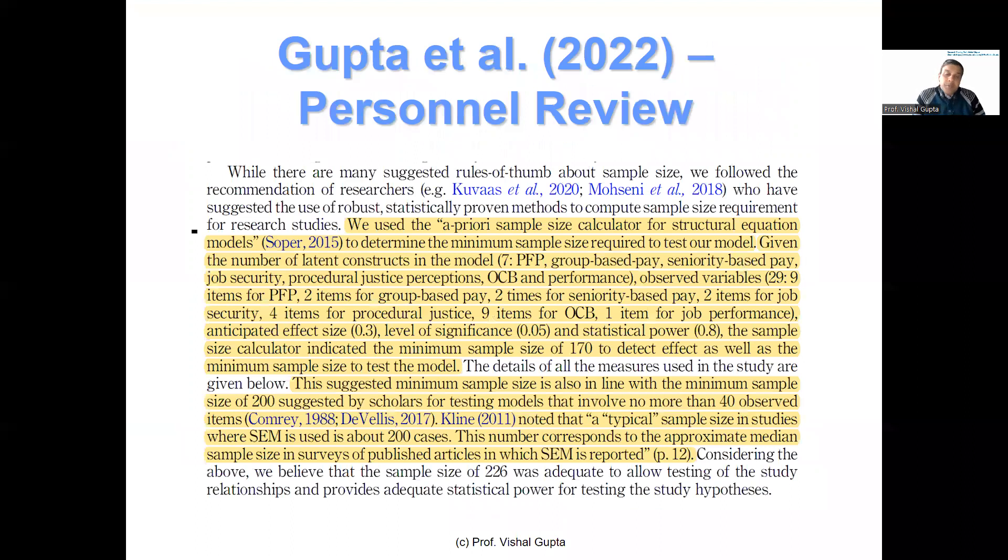Now let me show you how I reported this in my research paper. I said, in order to test this model, we used an a priori sample size calculator to determine the sample size given the number of latent constructs. As I told you, I had seven latent constructs: PFP, group-based pay, seniority-based pay, job security - these three were controls - group-based pay, seniority-based pay, and job security, procedural justice, OCB, performance, and PFP, but the four main constructs.